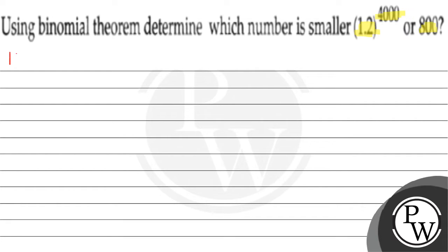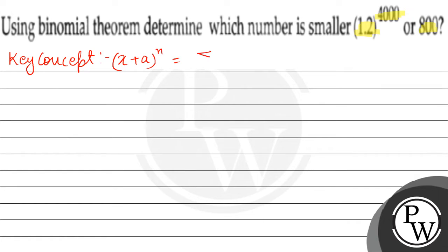Is question ka concept hai binomial expansion. Binomial expansion: (x + a) raised to power n, is equal to the summation from r equals 0 to n of nCr times x raised to power (n minus r) times a raised to power r.